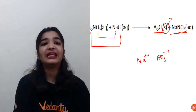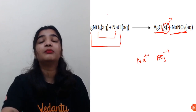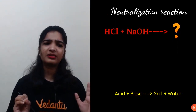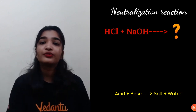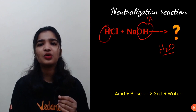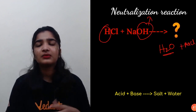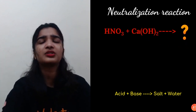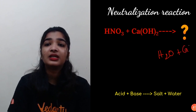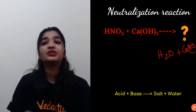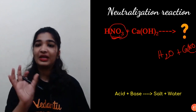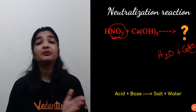For neutralization reactions, the products are always salt and water. First write down H₂O — the H from the acid and the OH from the base form water. Whatever is left becomes the salt. Example: HNO₃ + Ca(OH)₂ → H₂O + Ca(NO₃)₂ (calcium nitrate). Note that NO₃ is a polyatomic ion and cannot be separated, so nitrate stays intact as one ion.